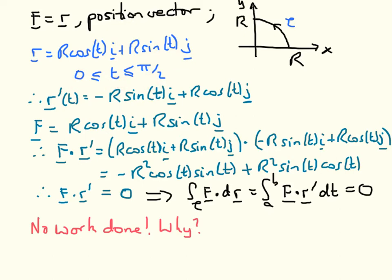When t=0, the coordinate is r·i, because cos(0)=1, plus 0. When t=π/2, the i-component vanishes, and we are left with r times sin(π/2), which is 1, times j. So this parameterisation describes this path correctly.